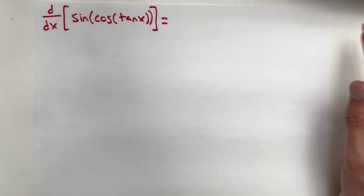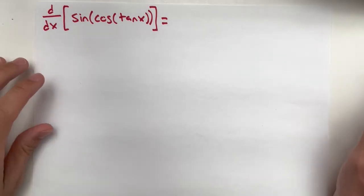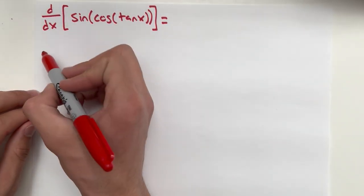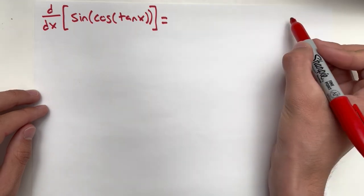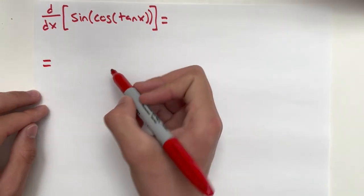The derivative of sine of cosine of tangent x. So this is going to be a very fun, very big problem. A lot of chain rule going on here. Instead of starting up here like I normally do, I'm going to start down here.